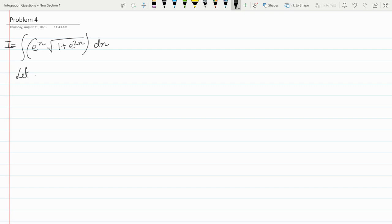I will assume e to the power x to be t. Why would I do that? Because I see e to the power x appearing two times. I want to simplify this. So e to the power x dx will be equals to dt.